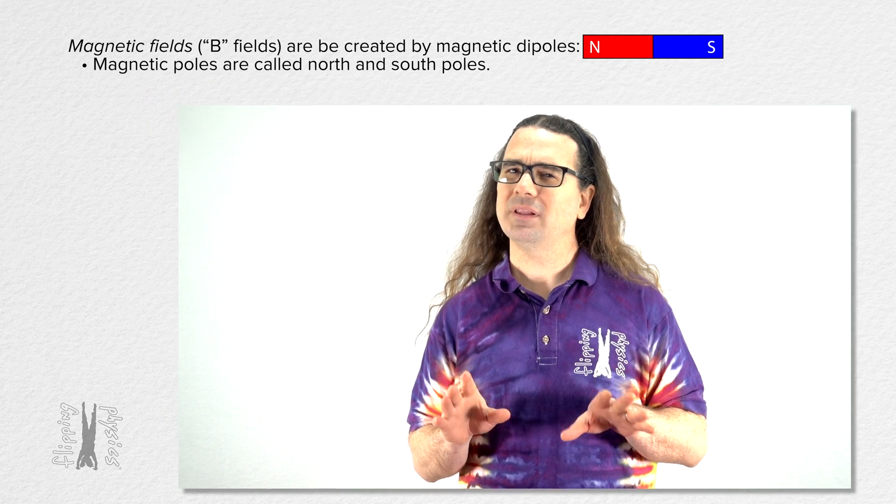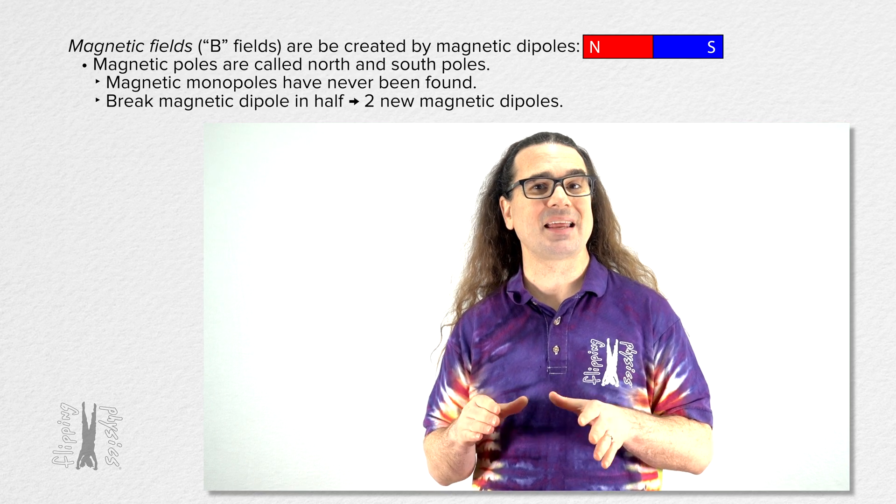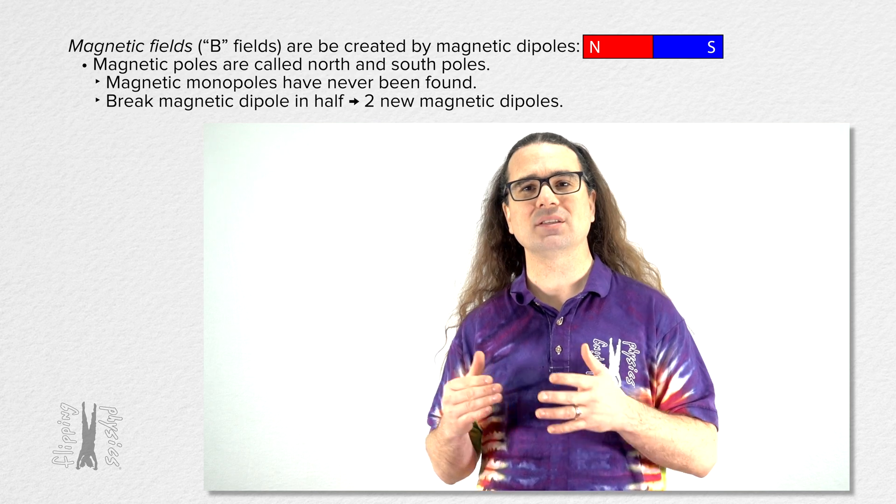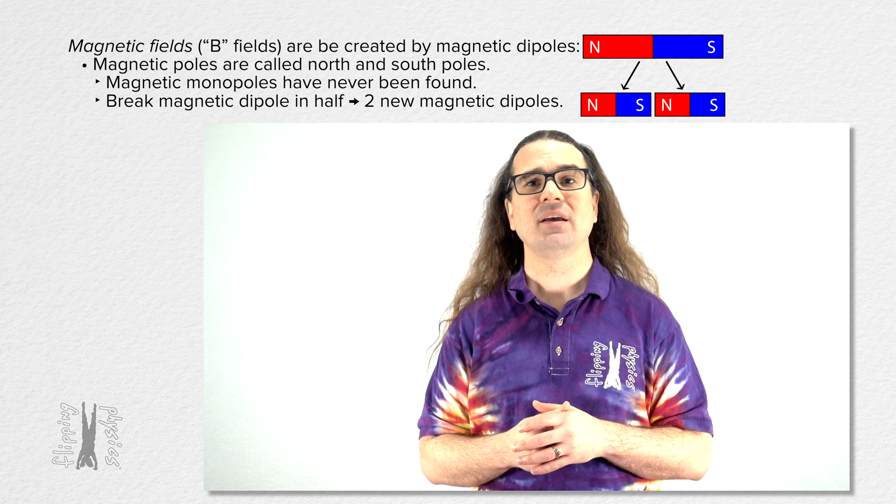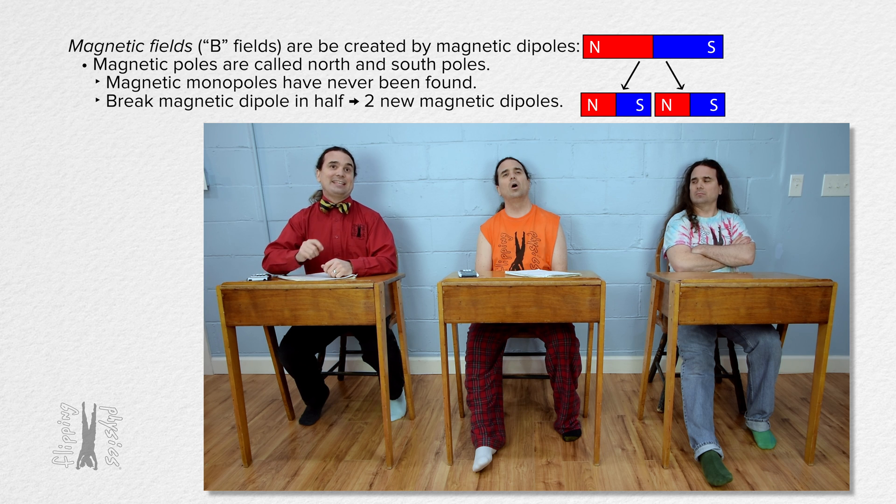However, please know that a magnetic monopole has never been found. When you break a magnetic dipole in two, it does not create one north and one south pole. Instead, it creates two magnetic dipoles, each with a north and south pole. Magnetic monopoles do not exist.